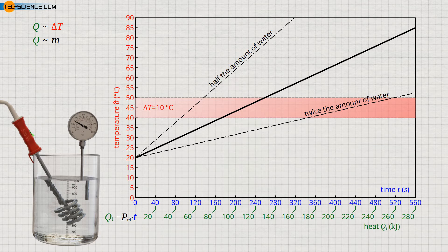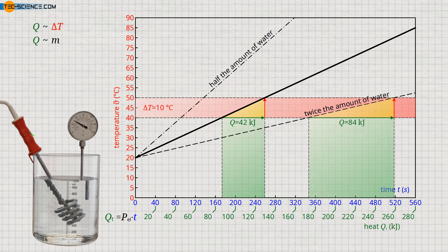Whereas the original amount of water requires an energy of 42 kilojoules to heat the water by 10 degrees Celsius, twice the heat energy of 84 kilojoules is necessary for twice the water mass. With half the water mass, on the other hand, the required heat is halved to only 21 kilojoules. The heat required and the mass to be heated are therefore actually proportional to each other, as already assumed at the beginning.